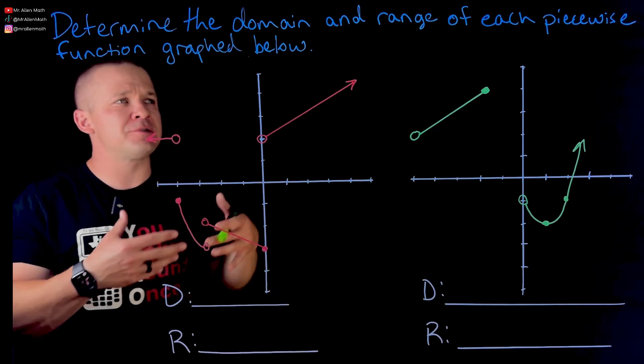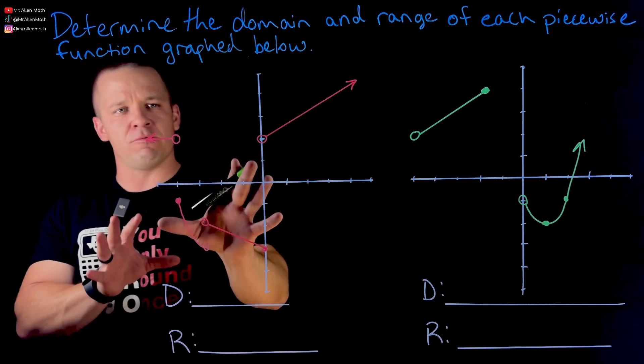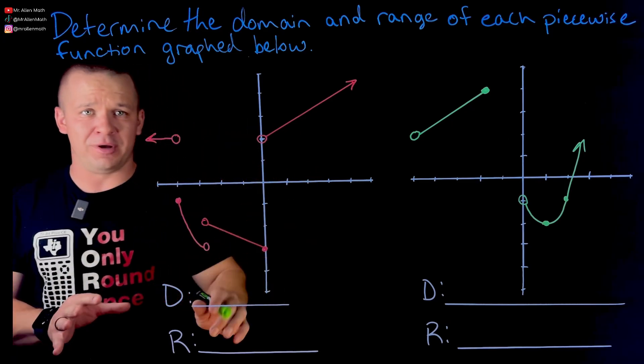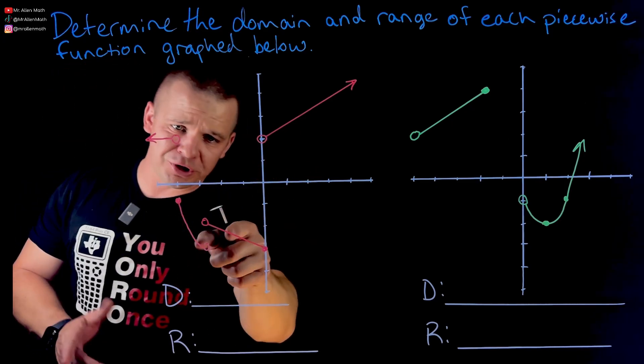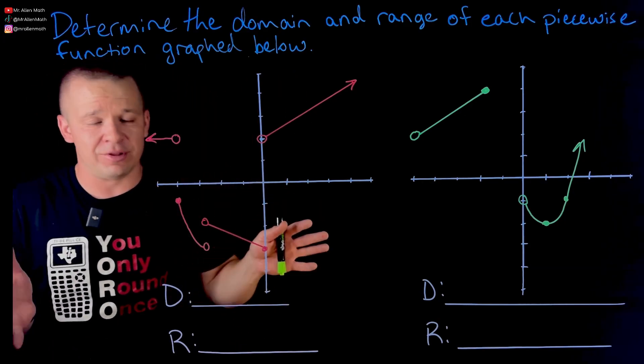And I feel like domain and range always seems so simple at first but proves to be rather difficult. So for this first one here in red, we got stuff all over the place. I got a horizontal line, a portion of a quadratic maybe, a couple linear pieces. I mean everything's going on here.